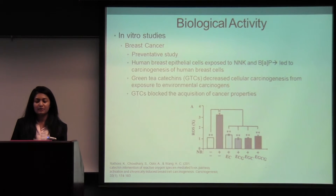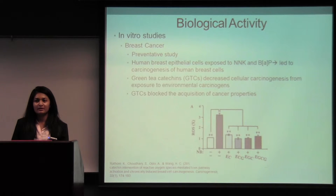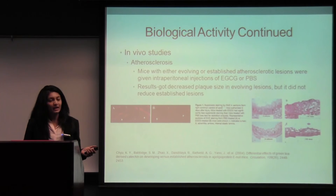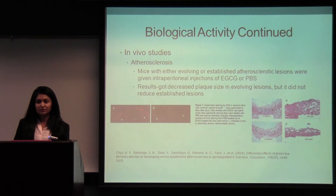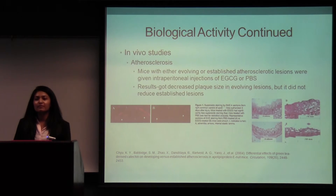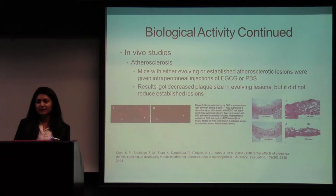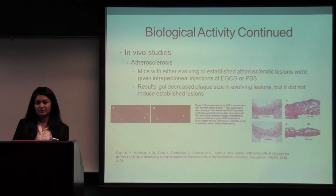An in vivo study was done in mice, also looking at the preventive aspects. Using a peri-adventitial cuff technique, they induced atherosclerosis and plaque development in mice. The mice with either evolving or established atherosclerosis were given either EGCG or PBS as a control, and results were taken at 21 and 42 days. They found that mice with evolving lesions had a decreased plaque size, whereas those with already-established lesions showed no change — which is really interesting because it suggests green tea may have preventive benefits, but once a disease is established, it may not help as much.